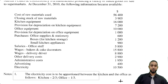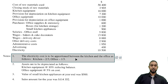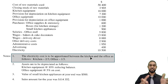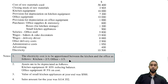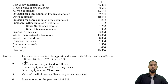We have some notes. The first note tells us that the electricity cost is to be apportioned between the kitchen — the manufacturing aspect — and the office as follows: kitchen gets two-thirds, office gets one-third. So we're going to split that $10,005 two-thirds to kitchen and one-third to office respectively.